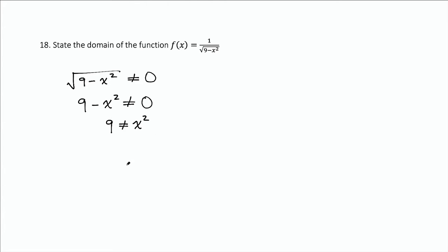And then we take the square root. And every time you introduce a square root, you get a plus or minus. The square root of 9 is 3, and of course, x. So we get x cannot equal positive 3 or negative 3.